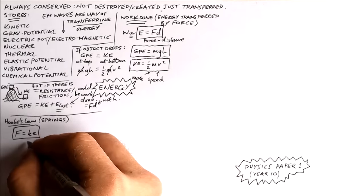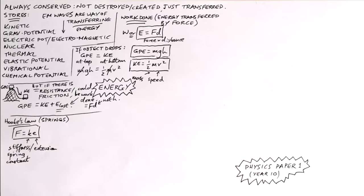Hook's law is to do with springs. That's F equals KE. Force that a spring is pulled with is equal to stiffness or spring constant times extension.